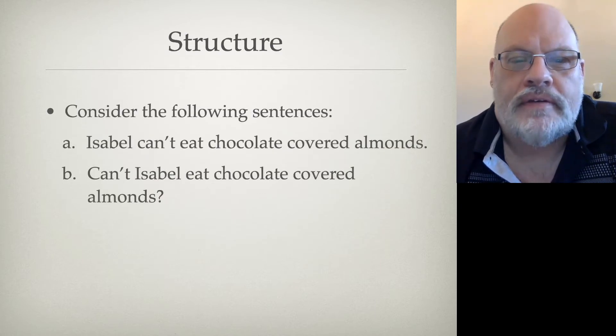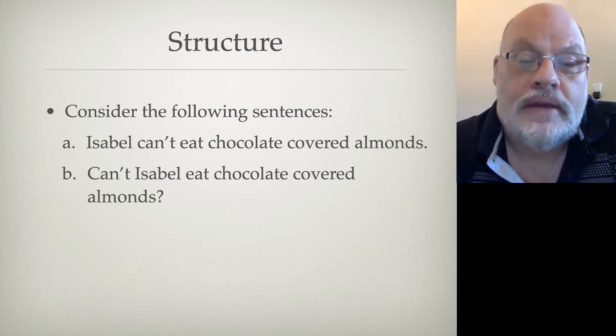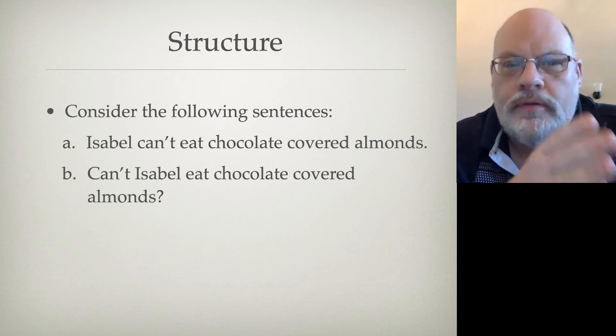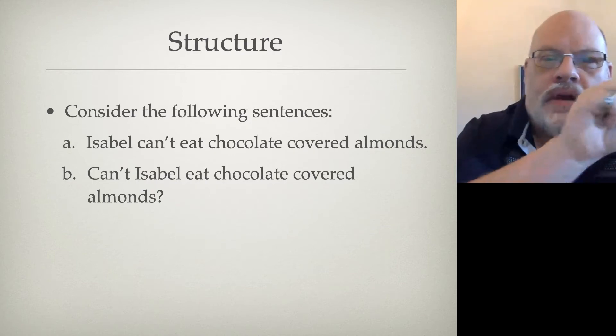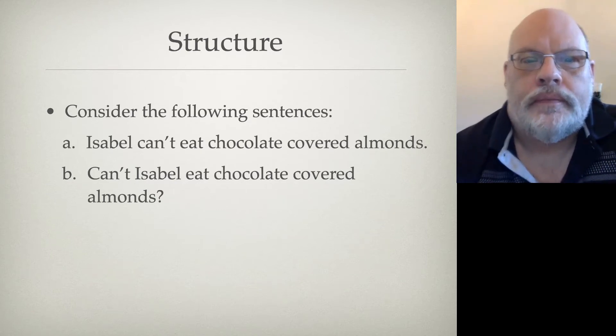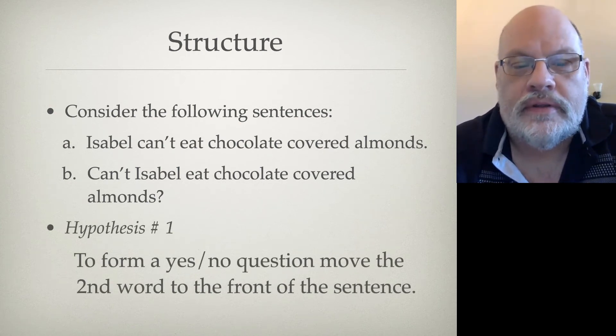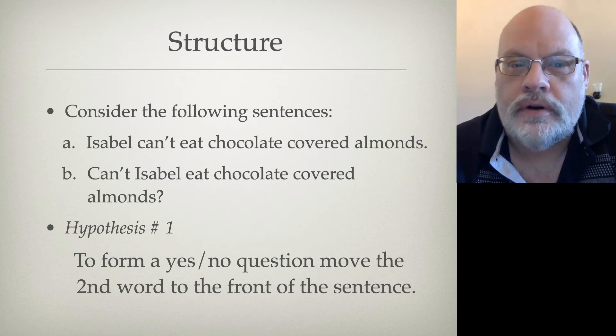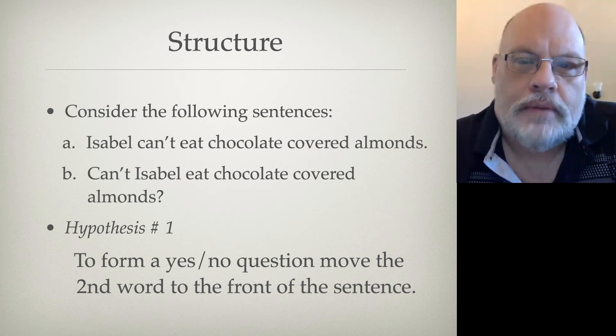Let's consider the following pair of sentences with that hypothesis that they're just linear strings of words. We have the sentence, Isabel can't eat chocolate-covered almonds. That's a statement. And then we have the yes-no question version: Can't Isabel eat chocolate-covered almonds? So, all you can do is count from left to right. What is the general principle for forming a yes-no question with this theory that words are just words on a string? One possible answer is to form a yes-no question, you take the second word in the sentence and move it to the front. For example, in Isabel can't eat chocolate-covered almonds, can't is the second word, and we just take it and the first word and flip them around. This phenomenon, by the way, is called subject-aux inversion.